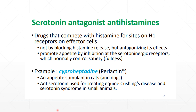Starting with serotonin antagonist/antihistamines — the drug under this class has two main effects. It blocks histamine, making it an antihistamine drug, and it also blocks the serotonin receptor. The drug is cyproheptadine, brand name Periactin. It exerts its antihistamine and antiserotonin effects by competing with histamine and serotonin for binding at their respective receptors. Cyproheptadine is classified as an H1 antihistamine because it blocks the H1 receptor, and it also blocks the serotoninergic receptor.